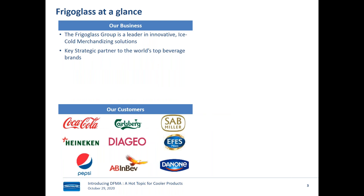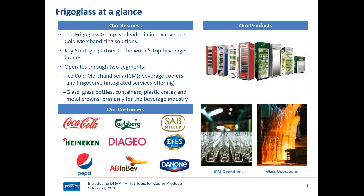I'll take a little bit of time in the beginning to introduce the company and product, give a history of how DFMA came into existence at Frigoglass, and then launch into some technical examples to show the results. At a glance, Frigoglass is a key strategic partner to the beverage industry worldwide. We make commercial refrigerators — we call them coolers — and also manufacture all the rest of the materials the beverage industry needs to sell their products, like glass bottles, plastic crates, and crowns for bottles.